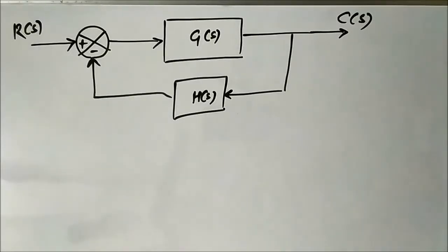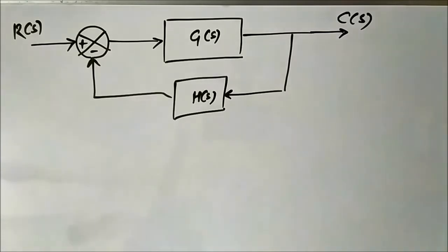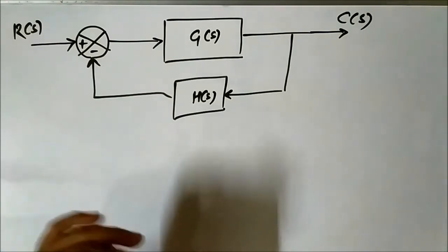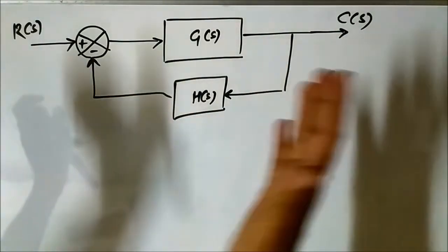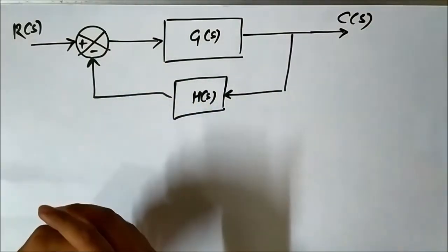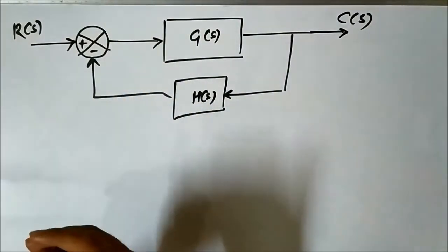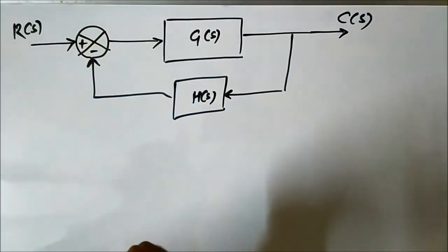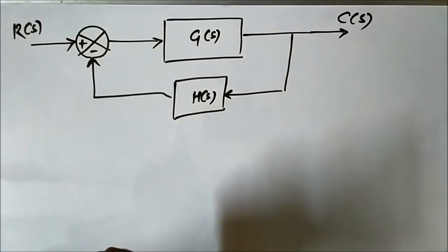Previously we discussed the open-loop transfer function. Now we will discuss the closed-loop transfer function for a closed-loop system. As usual, we have taken the general representation of a control system. We have a summing block to which the input signal is given, represented in the s-domain, and we have the forward path transfer function G(s).